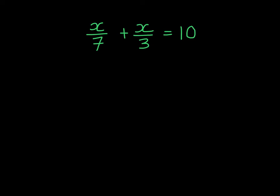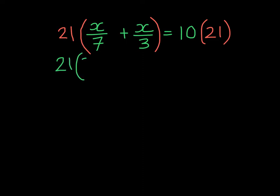And the lowest number that that is, is 21. It's the least common denominator. So we're going to multiply both sides by 21 — every term, even the one that does not have a denominator.